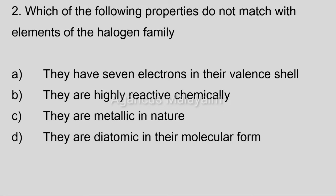Second question: Which of the following properties does not match with elements of the halogen family? Option A: they have 7 electrons in their valence shell. Option B: they are highly reactive chemically. Option C: they are metallic in nature. Option D: they are diatomic in their molecular form. Correct answer: Option C, they are metallic in nature.